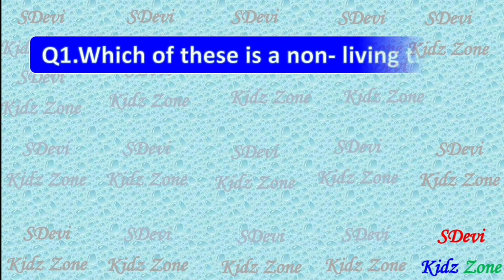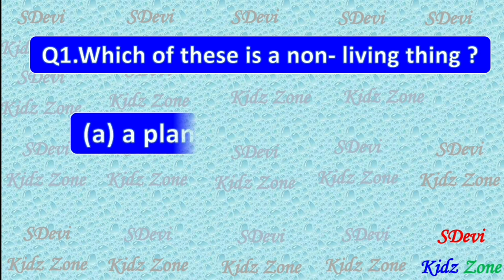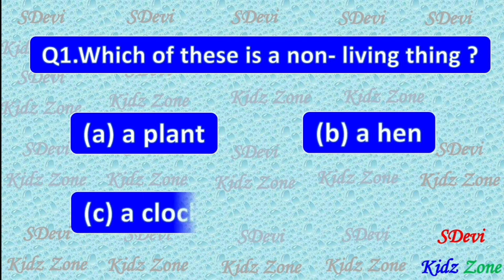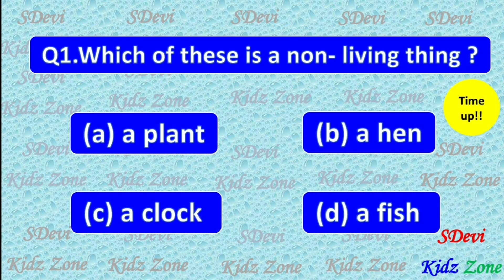Question 1. Which of these is a non-living thing? A. A plant. B. A hen. C. A clock. D. A fish. The correct answer is C. A clock.